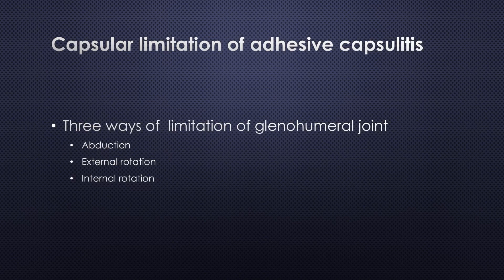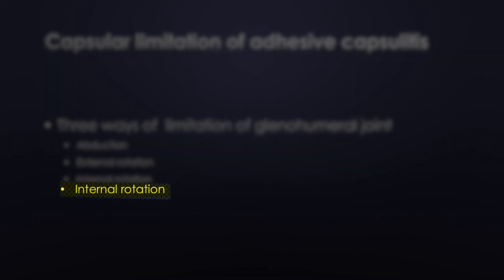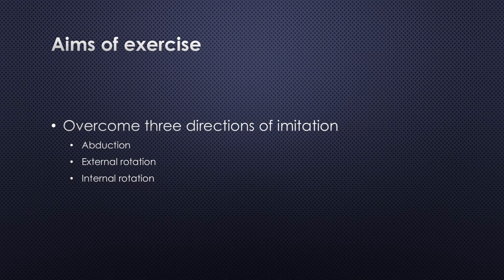Glenohumeral joint motion in adhesive capsulitis shows limitation in three ways: abduction limitation, external rotation limitation, and internal rotation limitation. So we aim to overcome these three directions of limitation.